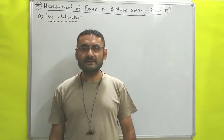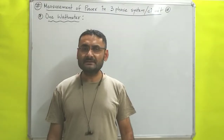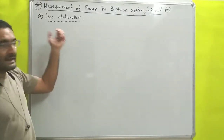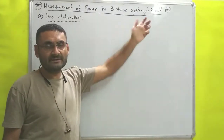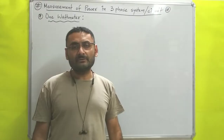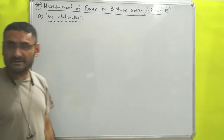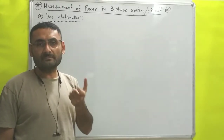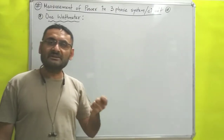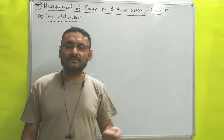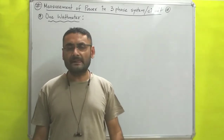Hello students, today we will study unit number 2, AC circuits, in which we are going to discuss one topic: measurement of power in a three-phase system or three-phase circuit. In this video we are going to discuss one method which is the 1 wattmeter method — that means with the help of 1 wattmeter how we can measure the power of a three-phase system. So without wasting much time let us start.